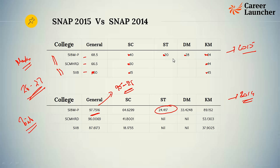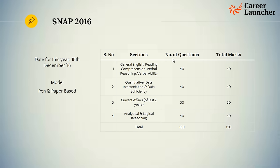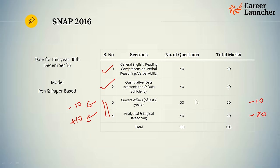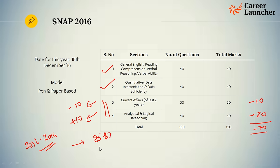With two days to go, here is the SNAP 2016 paper pattern. It remains exactly the same as last year except for one change: 10 fewer questions in one section and 10 more in another. There is also a loss of roughly 20 marks because last year's 30 reasoning questions were worth 2 marks each (60 marks total), now 40 questions at 1 mark each. The verbal section also went from 40 marks to 30 marks. So overall marks are down by 30. If difficulty is similar to 2012 to 2014, expect the cutoff to come down by about 10 marks, with 85 to 87 being a good score for SIBM Pune.